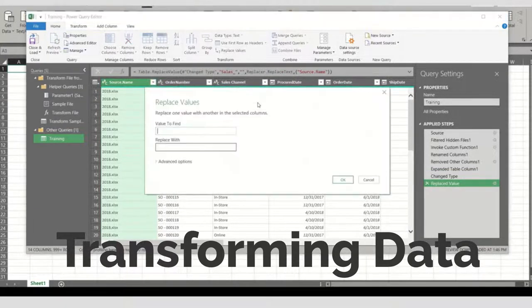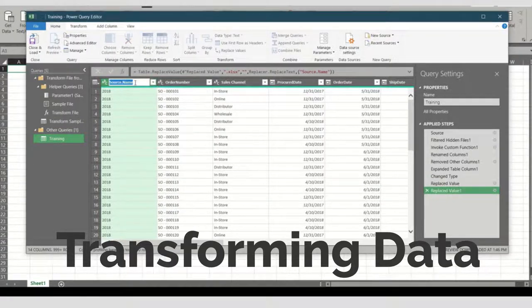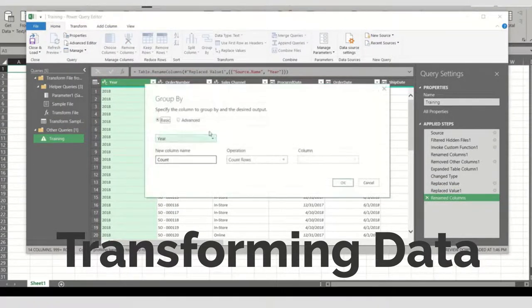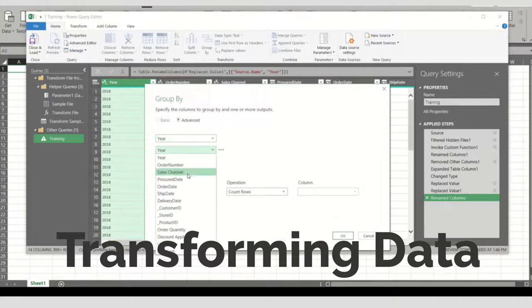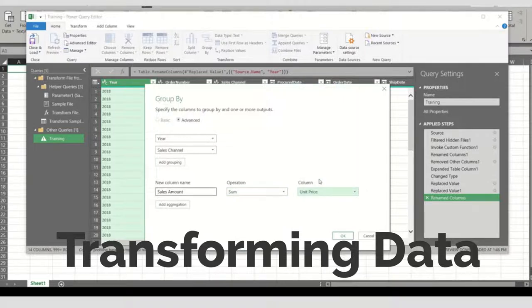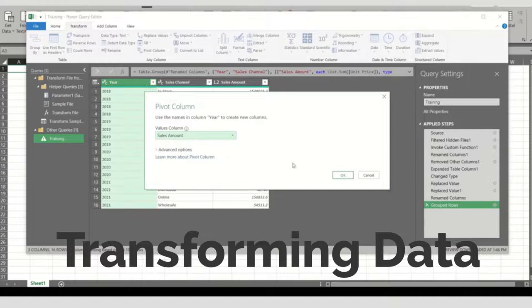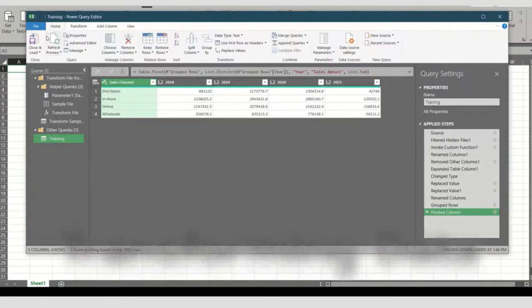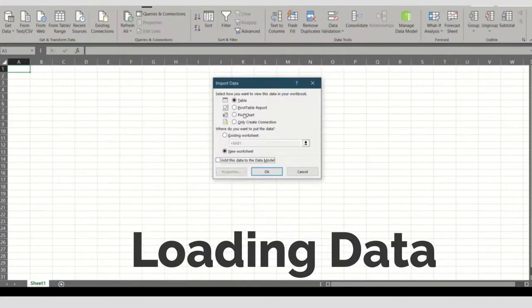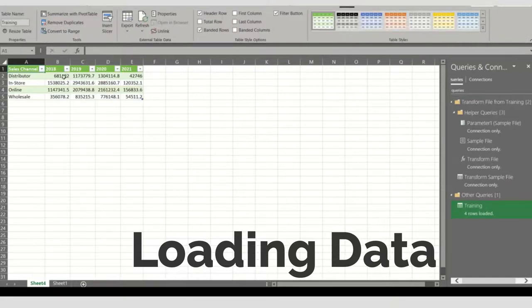Also, you can use Power Query to further transform the data to meet your goal, such as replacing value from single or multiple columns, change column name, group or summarize your data, and pivoting the data to your preferred view. Your end result will be loaded to your preference. Normally it is loaded as a table in Excel. I am sure you do realize from the example video how quick the data transformation can be done.